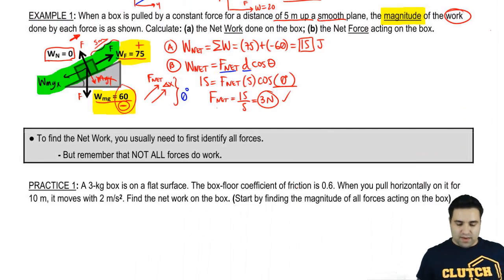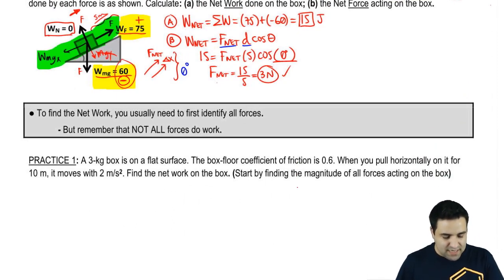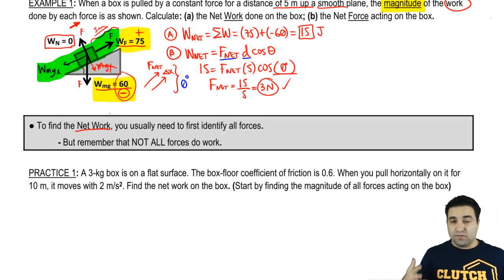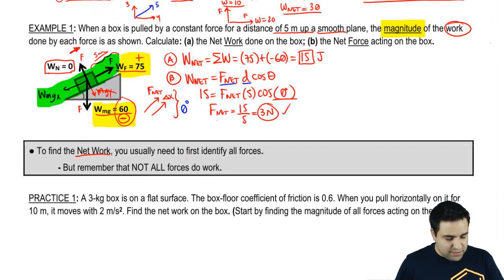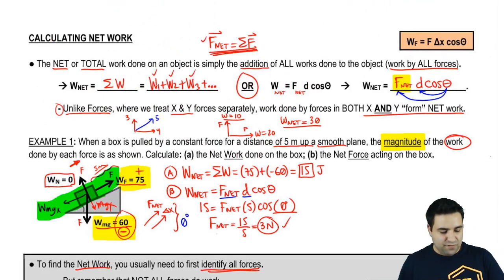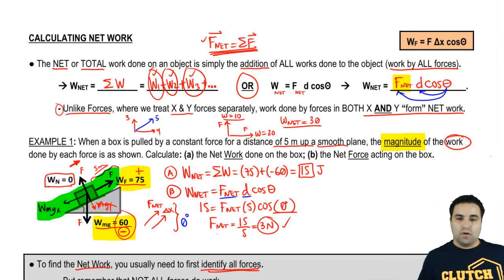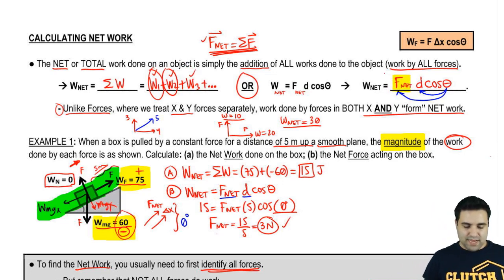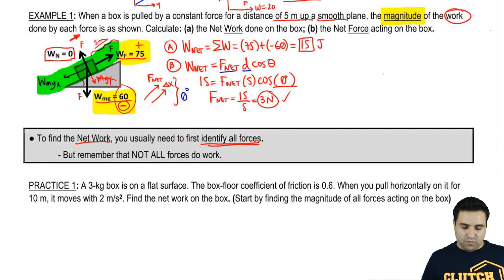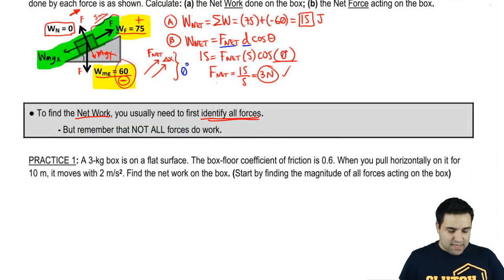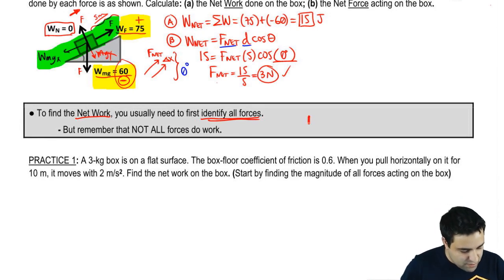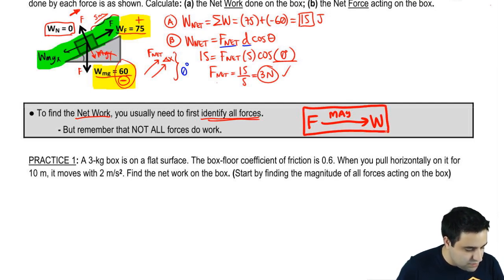So I want to make another quick point here. To find the net work, there are two ways. One is if you have the net force, that's great. But usually, you're going to need to first identify all the forces, whether it's because you are going to identify all the forces so you can find all the little works and add them up, or because you're going to identify all the forces so you can calculate the net force. But the point is that to find that work, you first have to identify forces.